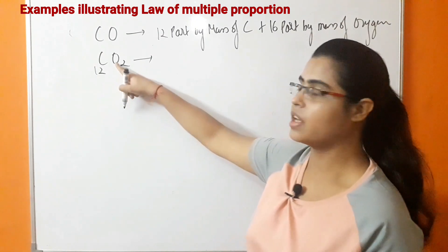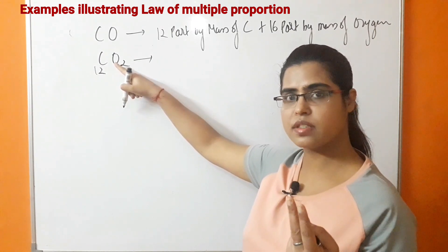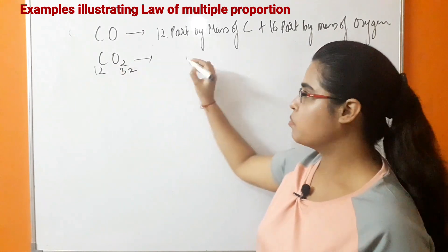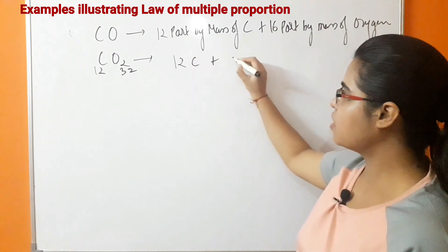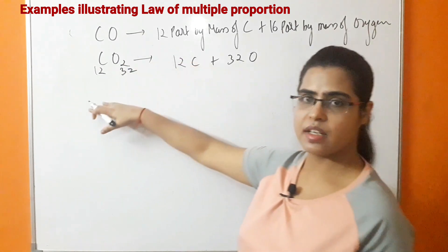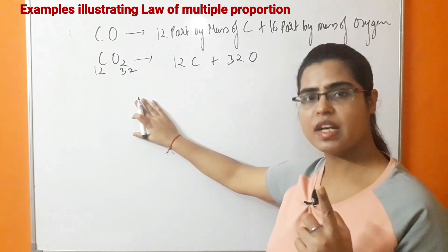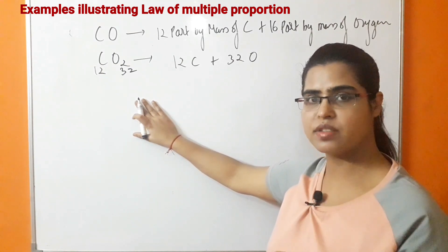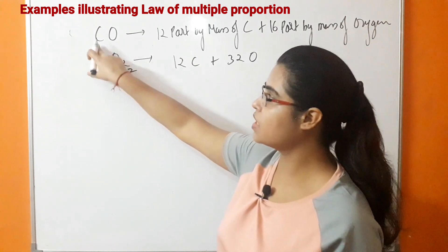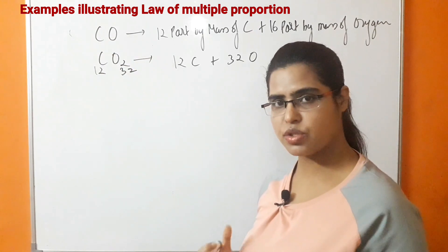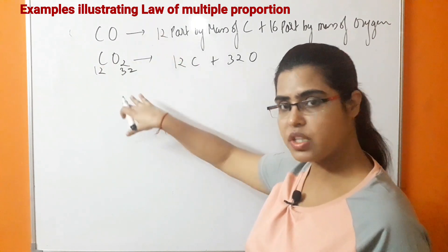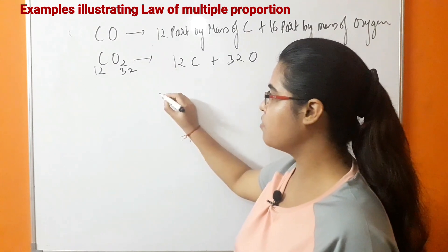Similarly, in CO₂, carbon has mass 12, whereas oxygen has two atoms, so oxygen has mass 32 (16 × 2 = 32). So 12 parts by mass of carbon combine with 32 parts by mass of oxygen. In both cases, if we fix the mass of one element, we can find the ratio of the other. Carbon is fixed at mass 12 in both cases.